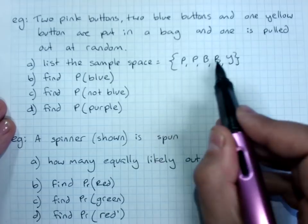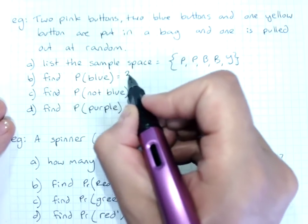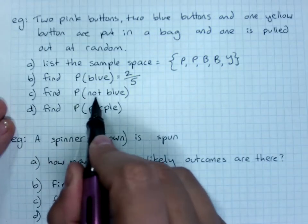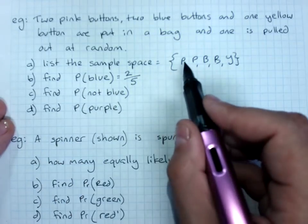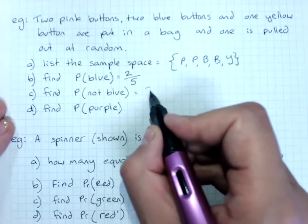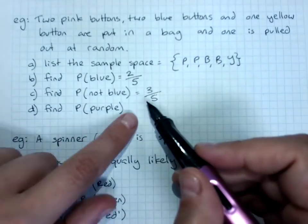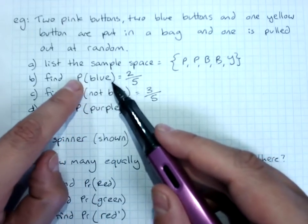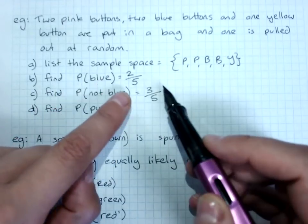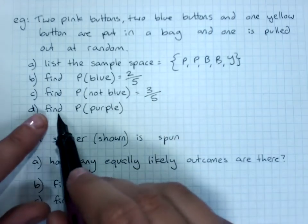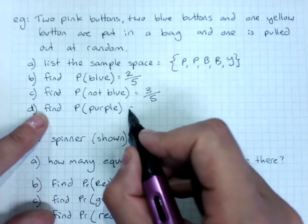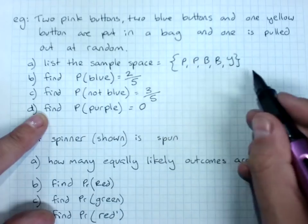The probability of getting a blue button - two blue outcomes out of five in total - two out of five. The probability of getting a not blue button - not blue, not blue, not blue, and not blue - three out of five. But you'll notice it's just what there was left over - the probability of blue and not blue, two-fifths and three-fifths. Find the probability of a purple button. Trick question - it's zero because there are no purple buttons in there.